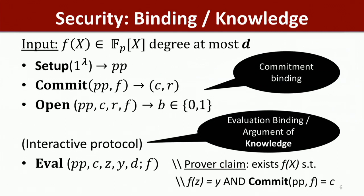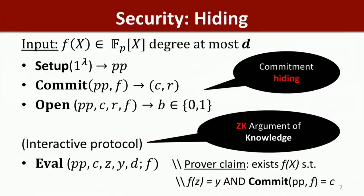A slightly stronger property is that if I'm able to run the eval protocol and convince you of the evaluation on any point of your choice, then I must actually know the entire polynomial — this is an argument of knowledge. We also want hiding properties for zero-knowledge: the commitment scheme should be hiding so no information about the polynomial is revealed from a commitment, and the interactive protocol should be a zero-knowledge argument of knowledge — you only learn the evaluation on a point, nothing else about the polynomial.